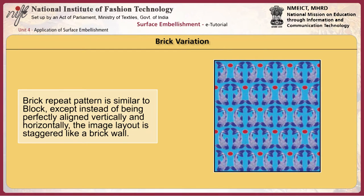Brick repeat is similar to block except that, instead of being perfectly aligned vertically and horizontally, the image layout is staggered like a brick wall. The brick repeat is similar to a half drop repeat rotated 90 degrees — one produces the other. The main difference is that the brick repeat forms a horizontal emphasis while the half drop forms a vertical one.